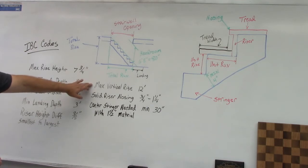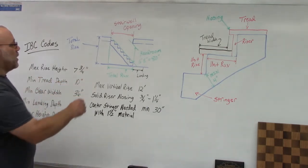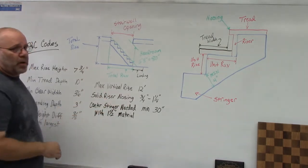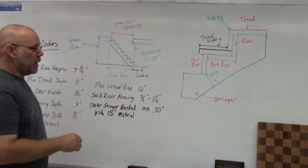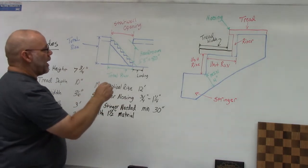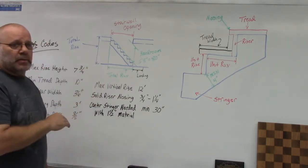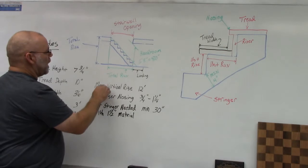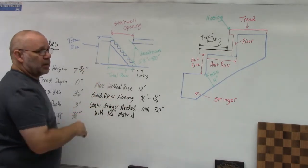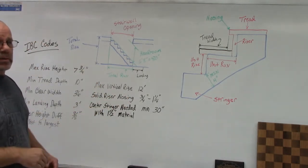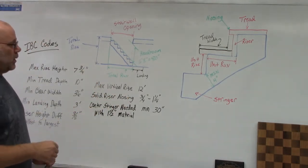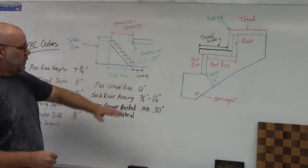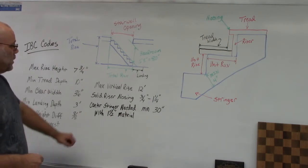The next code is maximum vertical rise. If the total rise exceeds 12 feet, you have to have a landing somewhere along your staircase. That vertical rise cannot exceed 12 feet — it would make your stringers way too long, so code requires you to break it up if it goes over 12 feet.